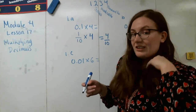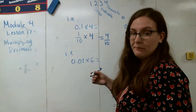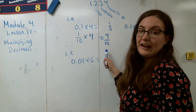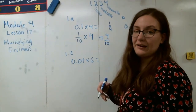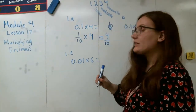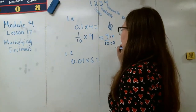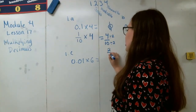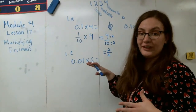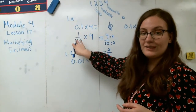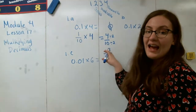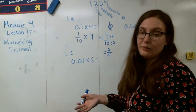Now I can also simplify this and I think about what can I divide 4 by. Well I can divide 4 by 1, 2, and 4. And then I have to look at the other number and think about can I divide 10 by 1, 2, or 4. Well the biggest number I can divide that by is 2. So I'm going to do 4 divided by 2 and 10 divided by 2. And that gives me 2 fifths for my final answer. So all we did for this problem is we changed our decimals into fractions, multiplied them like we know how to multiply fractions, and then got our final answer. And that's all we need to do for these.